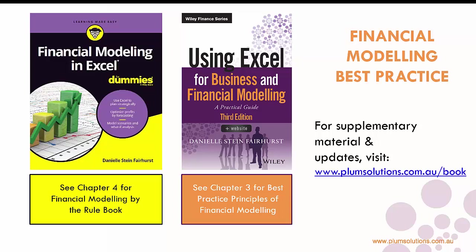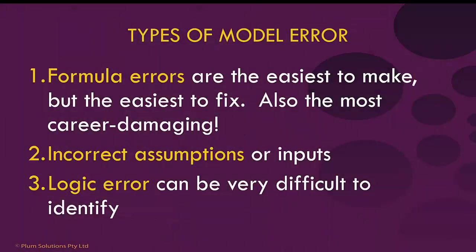Financial modelling is such an important topic, and best practice is a critical part of it. The reason financial modelling best practice is so important is to reduce the possibility of error. There are three different types of errors that can occur in a financial model. If you are not absolutely terrified of having an error in your financial model, you should be. It's probably the number one concern — the formula error. The first type is the easiest mistake to make but also the easiest to fix; however, if a formula error slips through, it's probably quite career damaging.